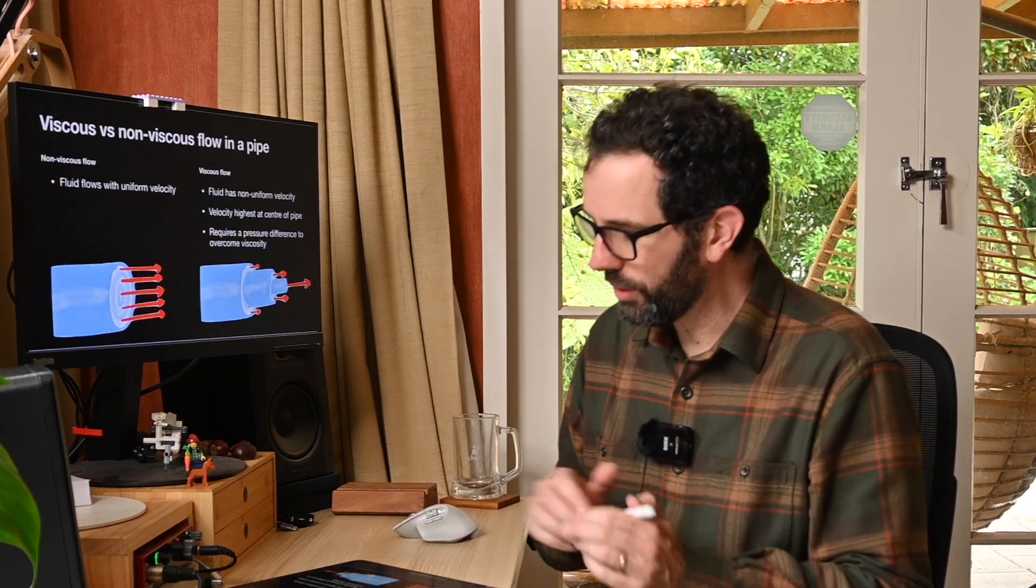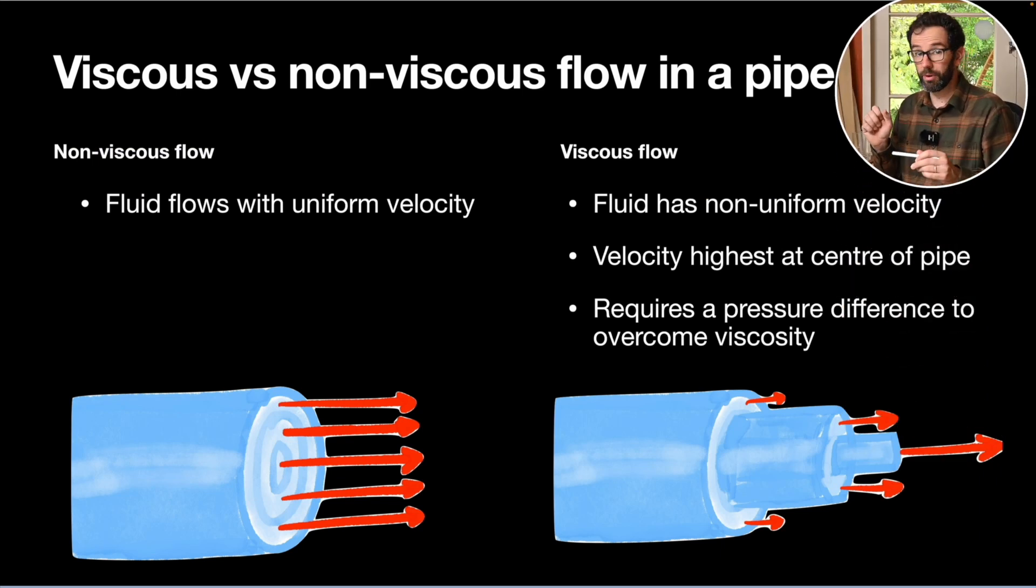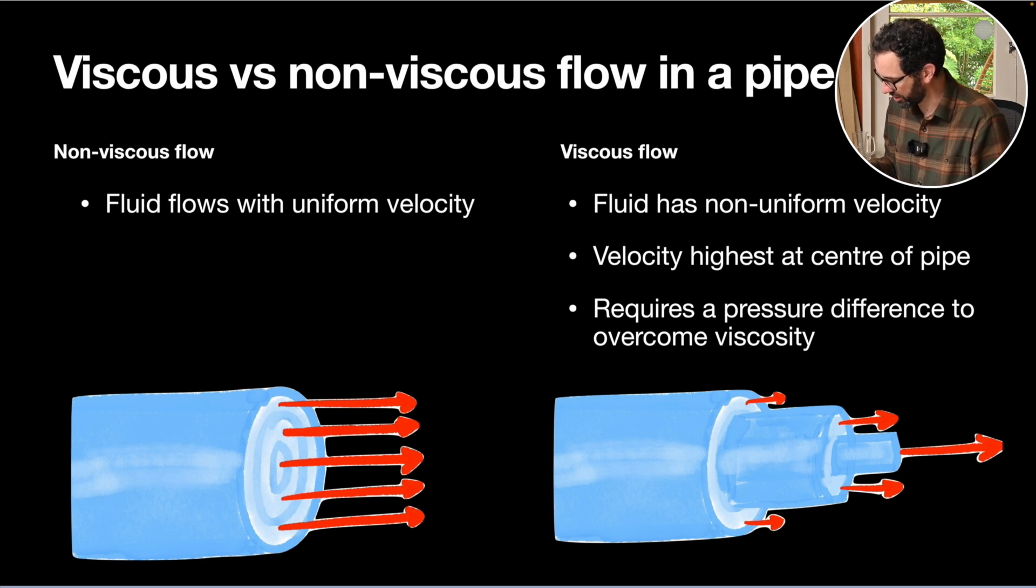When we have a flow of a liquid in a pipe, you can kind of see the difference between viscous flow and non-viscous or inviscid flow. If you have no viscosity, that's what we've kind of been assuming up to this point, then the flow will be the same speed at every part of the pipe.